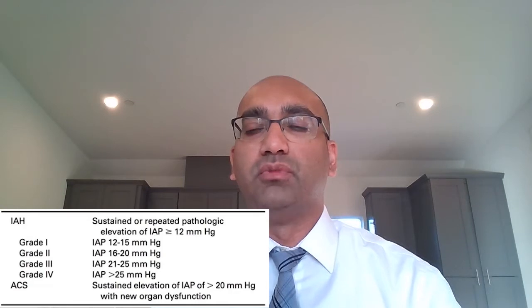Intra-abdominal hypertension is defined as sustained intra-abdominal pressure of 12 or more millimeters of mercury. Abdominal compartment syndrome is defined as sustained intra-abdominal pressure of 20 millimeters of mercury or more and a new organ dysfunction. This is what makes ACS different from intra-abdominal hypertension — the presence of a new organ dysfunction.